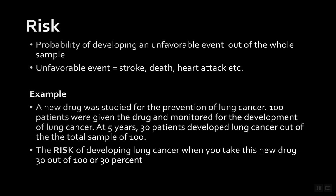When you're calculating the risk, it would be the number of people that developed the unfavorable event out of the total. So in this case you would do 30 people who developed the stroke divided by the total 100 — that includes people who did and didn't develop the stroke.